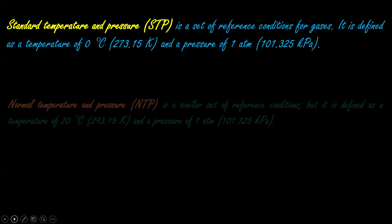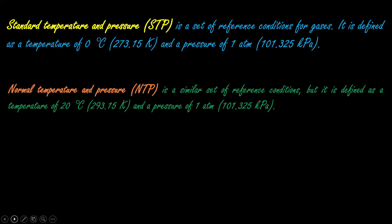And NTP — normal temperature and pressure — is also a reference condition where temperature is 20 degrees Celsius and pressure is 1 atmospheric pressure. So the basic difference between STP and NTP is temperature: at STP, temperature is 0 degrees Celsius, but in the case of NTP, temperature is 20 degrees Celsius.